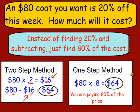The one-step method: since you're saving 20%, you're paying 80% of the full price. So we could just take the original price times 80% and get the same answer. It really doesn't matter — you can do it in one or two steps.